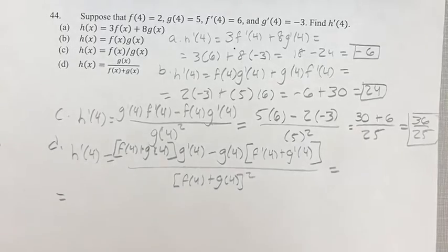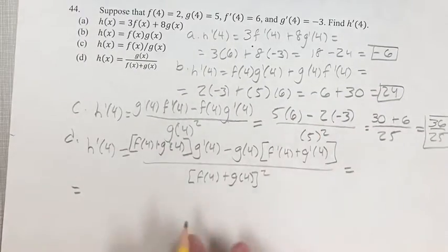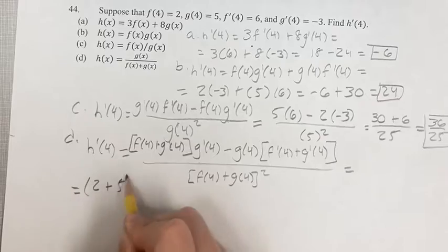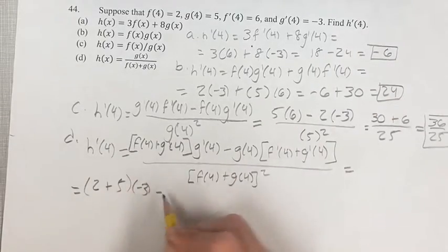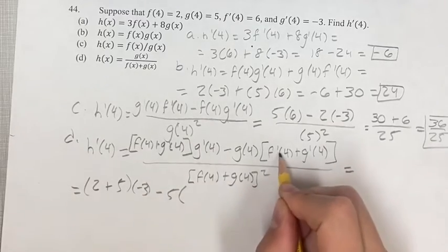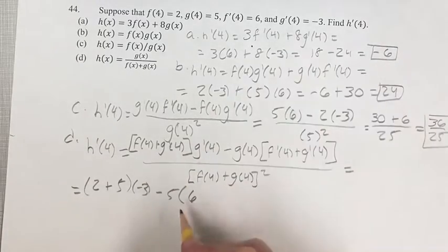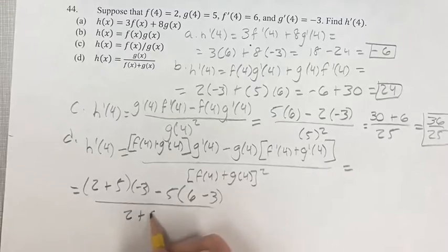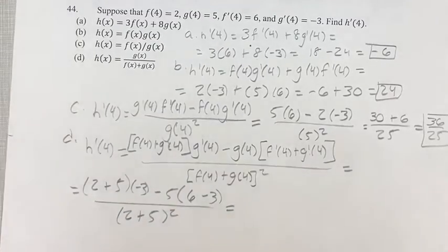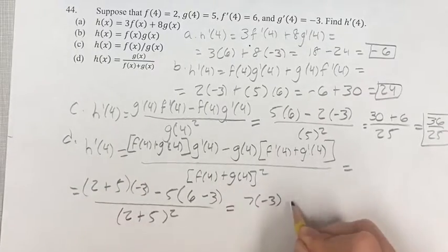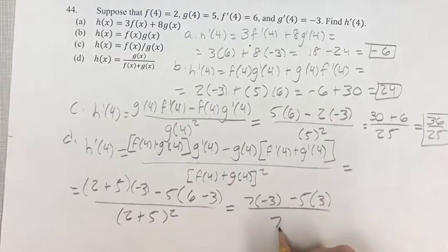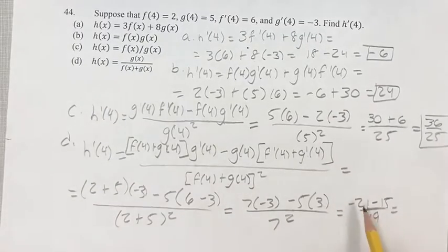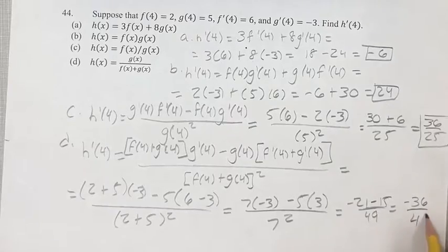All these are the same building blocks as before. So: f of 4 is 2 plus g of 4 is 5, times g prime of 4 which is negative 3, minus g of 4 which is 5, times f prime of 4 is 6 and g prime of 4 is negative 3, over f of 4 is 2 plus g of 4 is 5, squared. So 2 plus 5 is 7, times negative 3, minus 5 times 6 minus 3 is 3, over 7 squared. We get negative 21 minus 15 over 49, which is negative 36 over 49. That is your answer to part d.